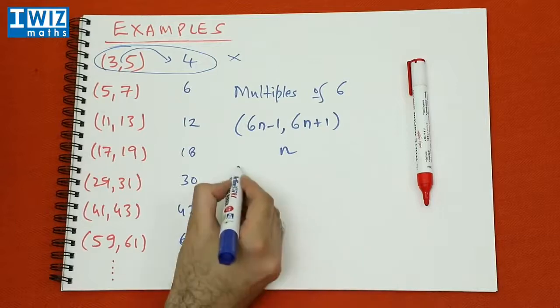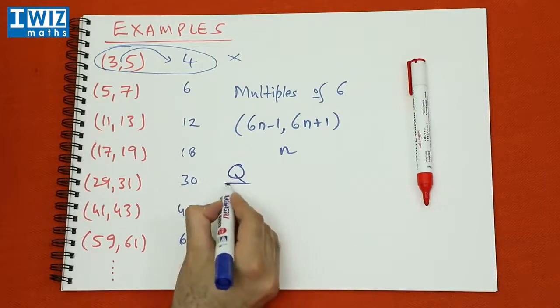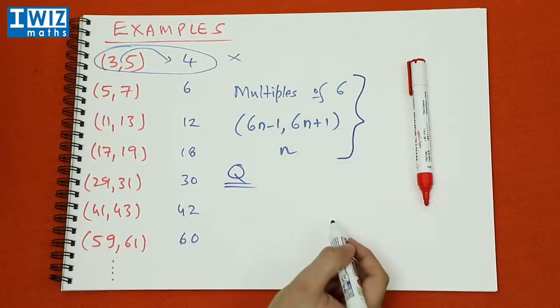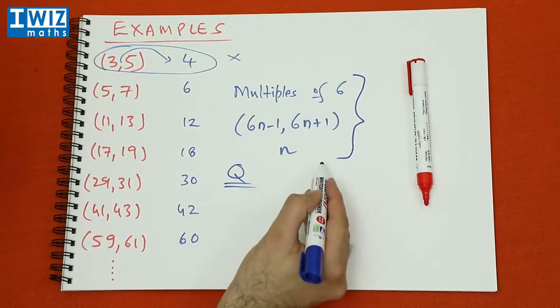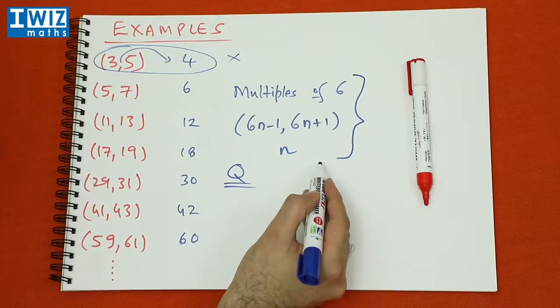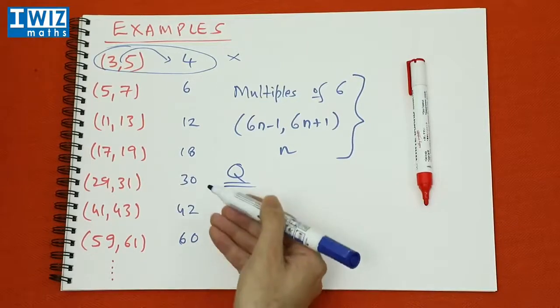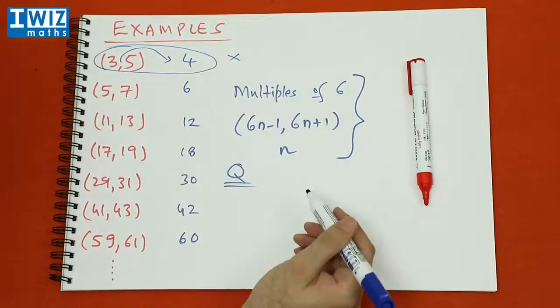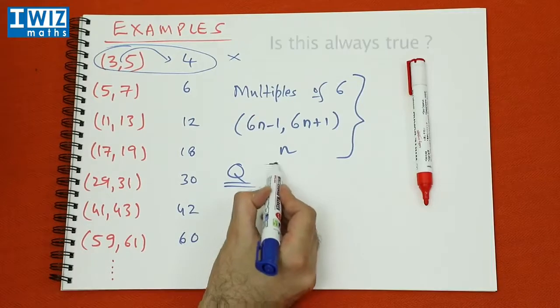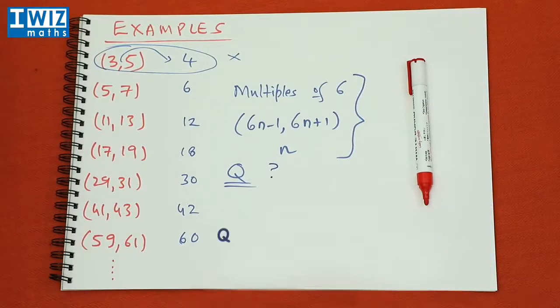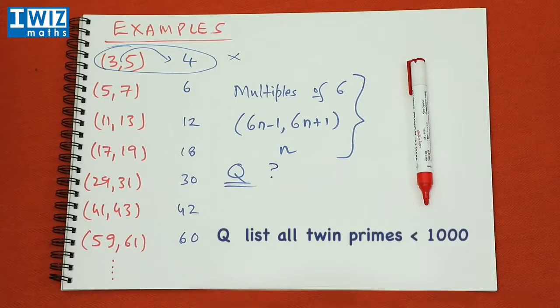So the question that we have for you is the following: is this universally true? Is this universally true for all twin primes or is it the case that it's only true for the first couple of twin primes apart from the very first twin prime? So that's the question we are going to ask you, is this universally actually true or not? We leave you with another question and that is can you list all twin prime numbers less than a thousand?